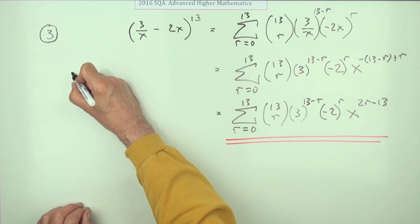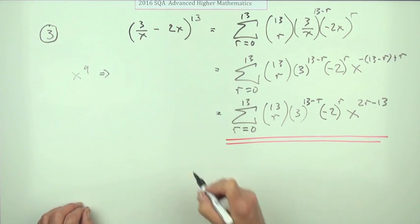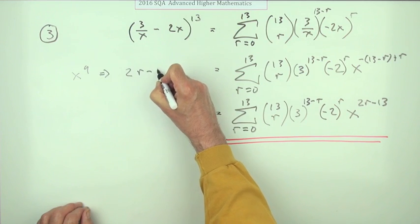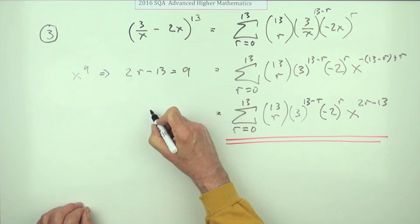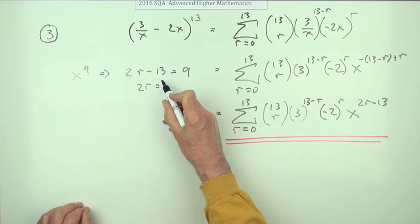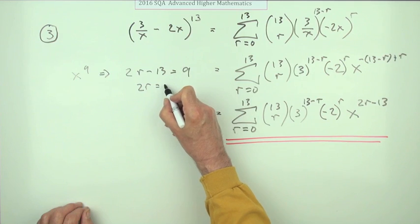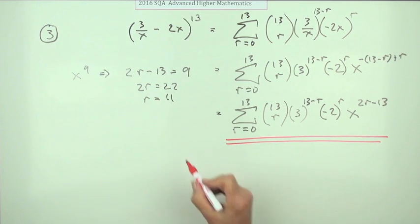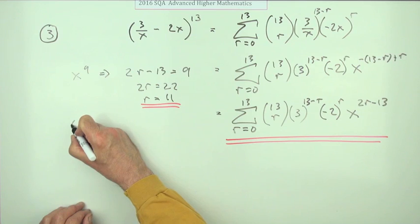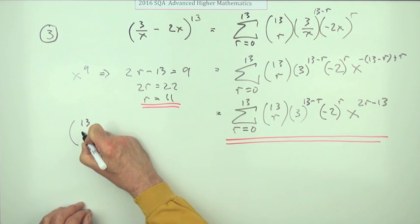We're looking for a term in x to the 9. If it's x to the 9, that means that 2r minus 13 has to equal 9. So 2r would have to equal 22, so r equals 11.